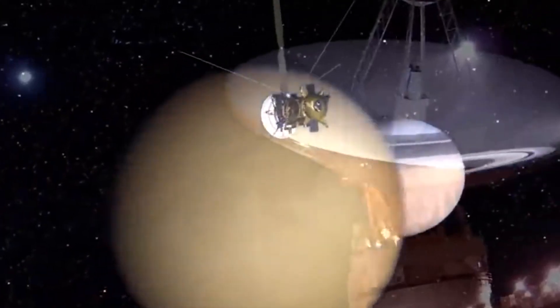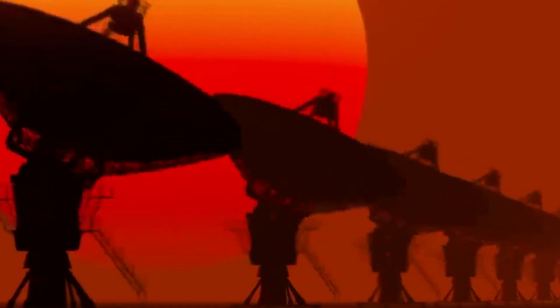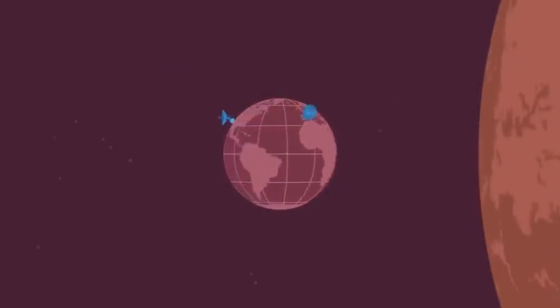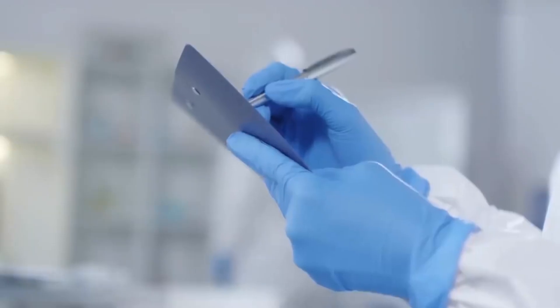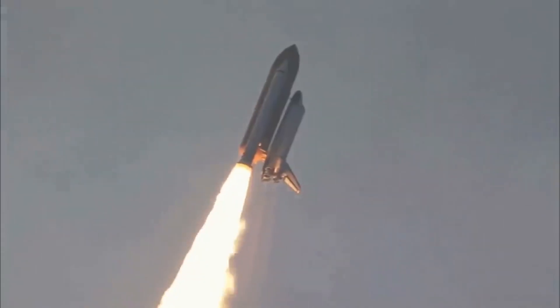Though Voyager 2 had been launched on a longer, more circular orbit, Voyager 1 arrived at both Jupiter and Saturn earlier.